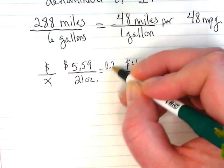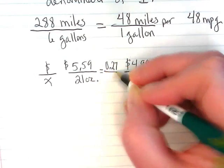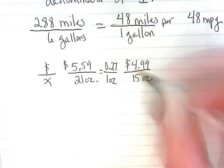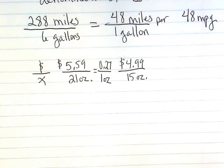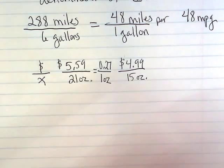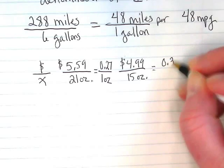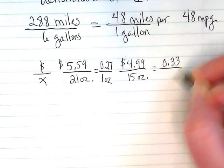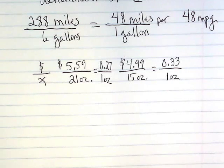And now take your calculators and divide $5.59 divided by 21. And for this one, I got $0.27 for one ounce. How much are we going to get for the other one? This one is $0.33 for one ounce. So which one's the better deal?